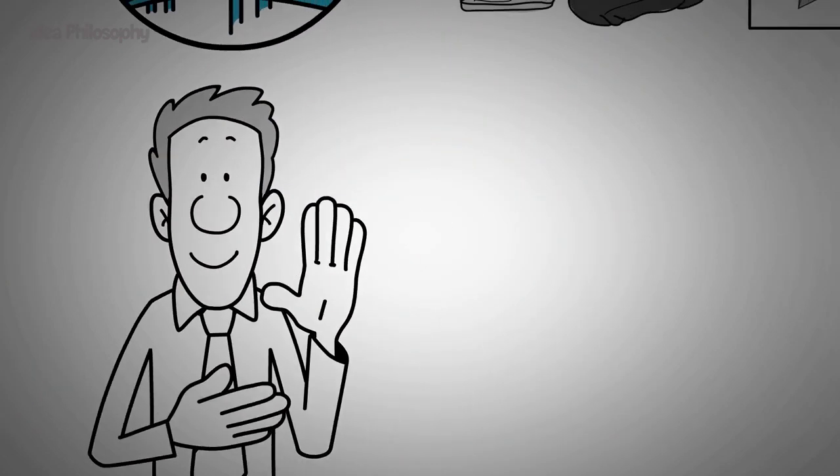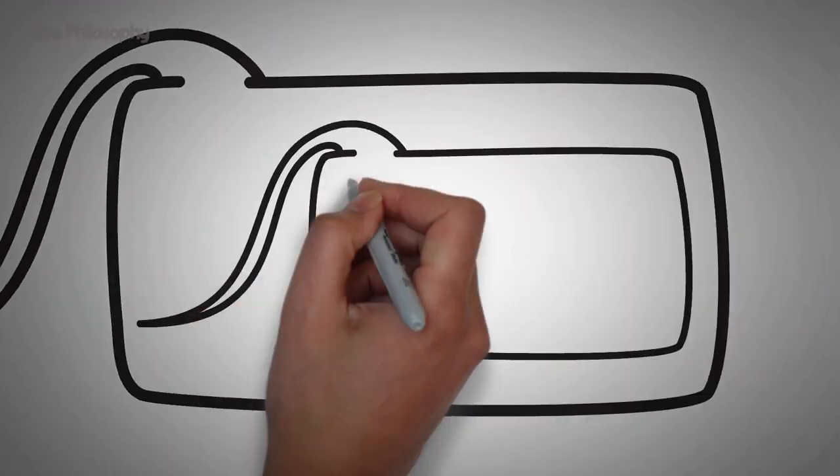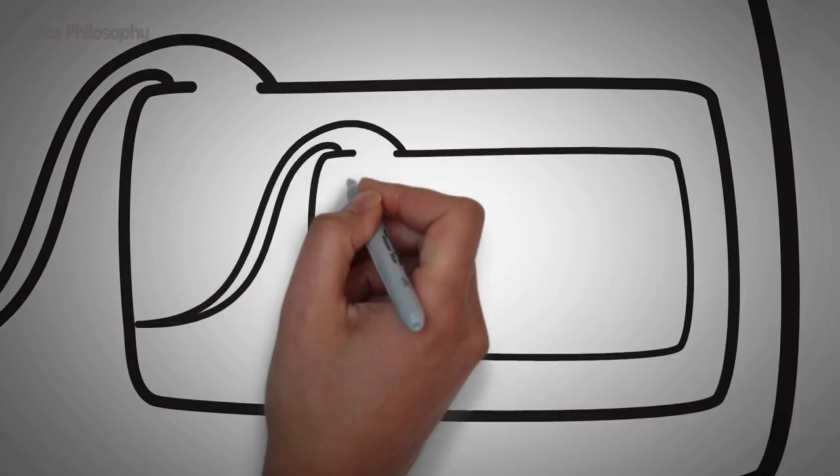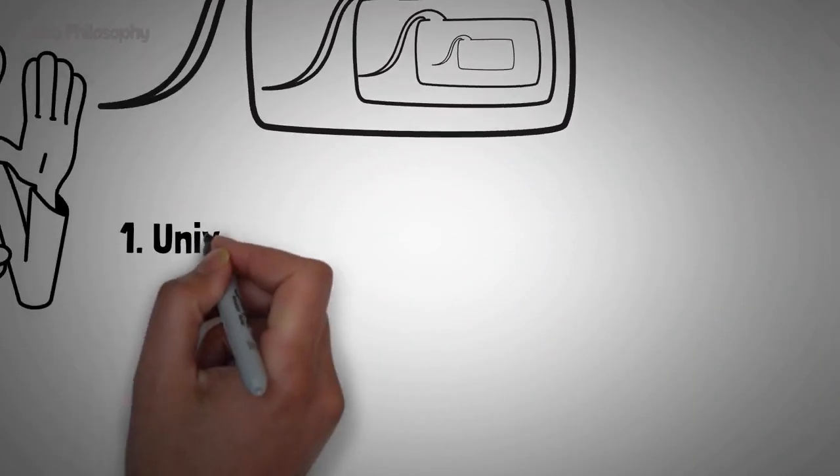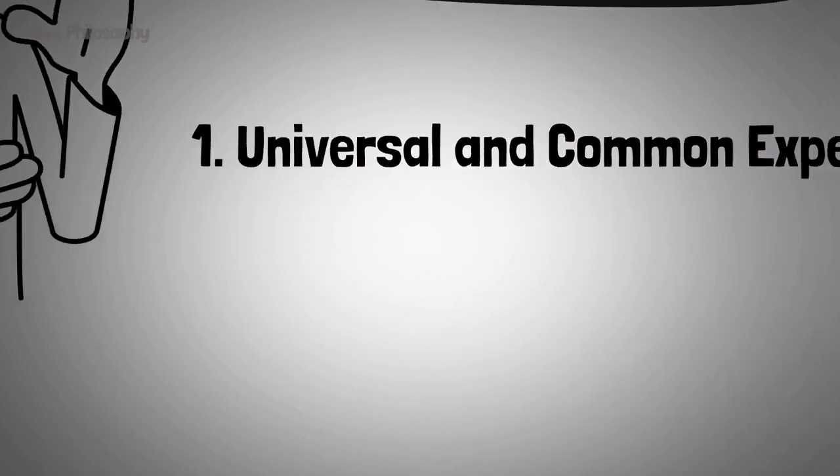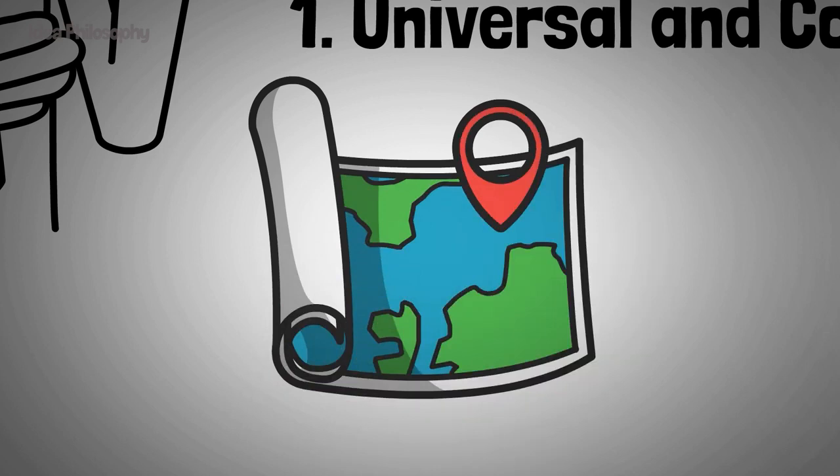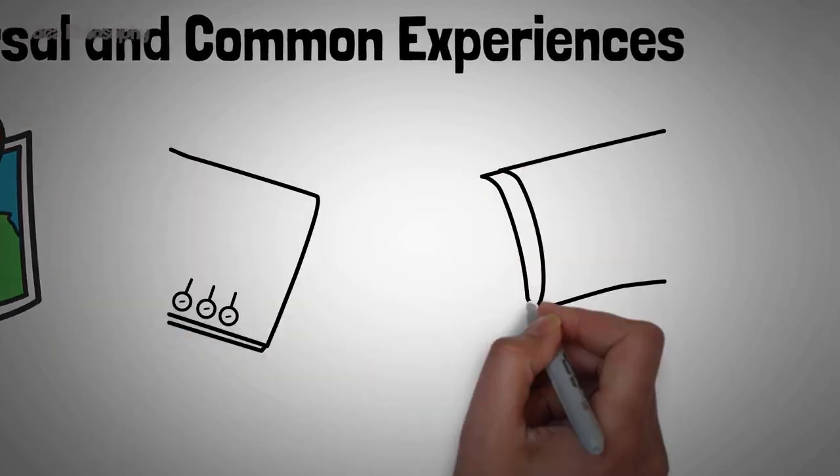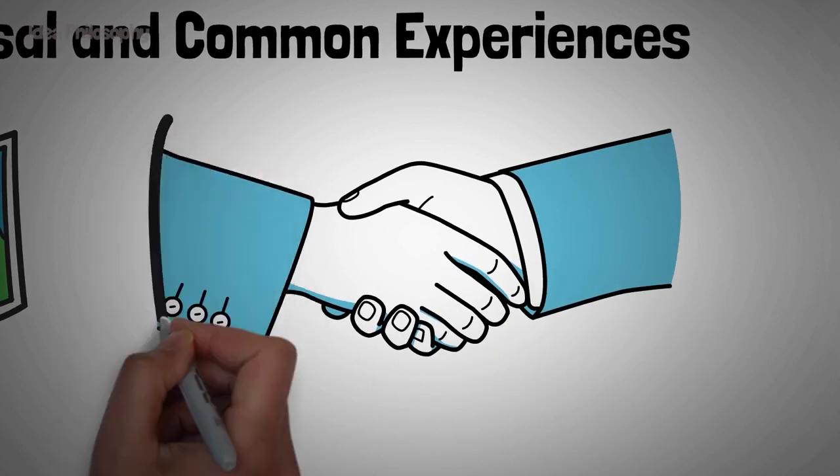Why are archetypes so essential and why did Carl Jung attach such great importance to them? Here are the reasons. Universal and common experiences. Archetypes represent the fundamental experiences that all people share. This ensures that archetypes are common across different cultures and societies.